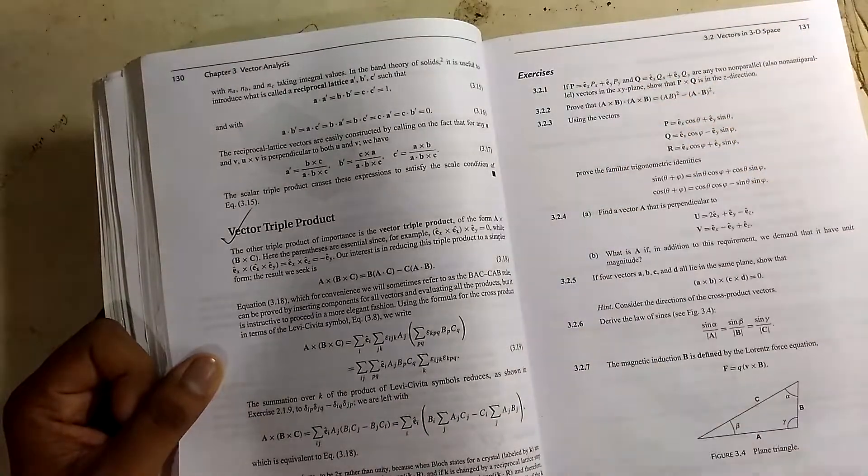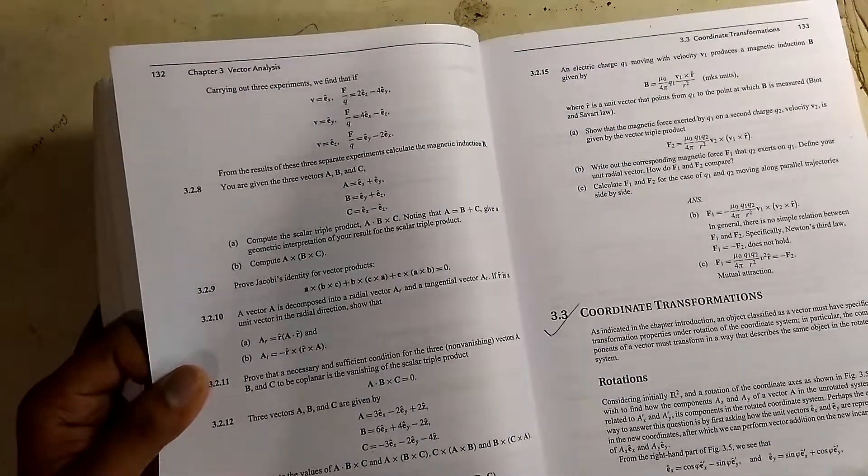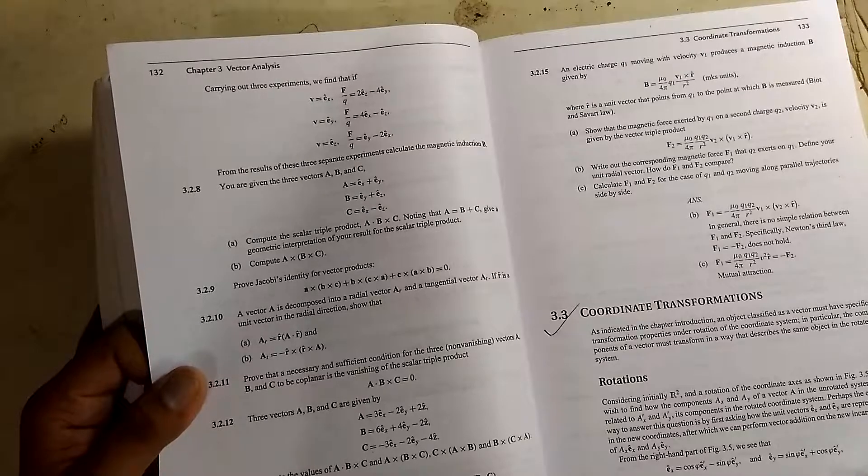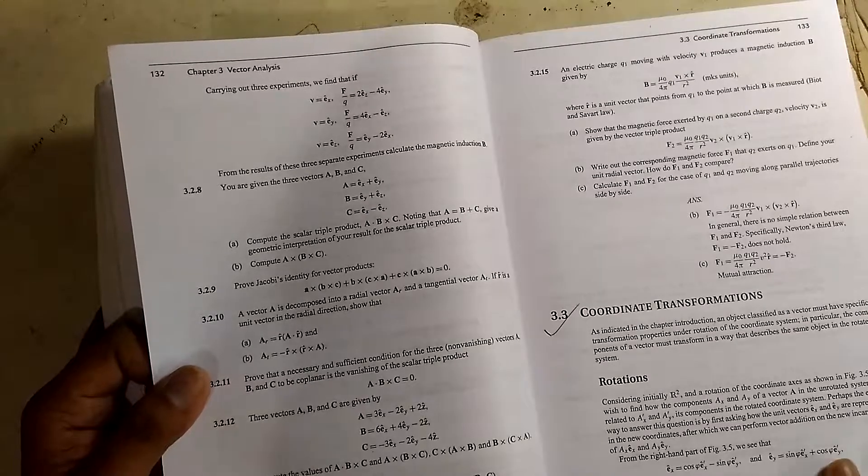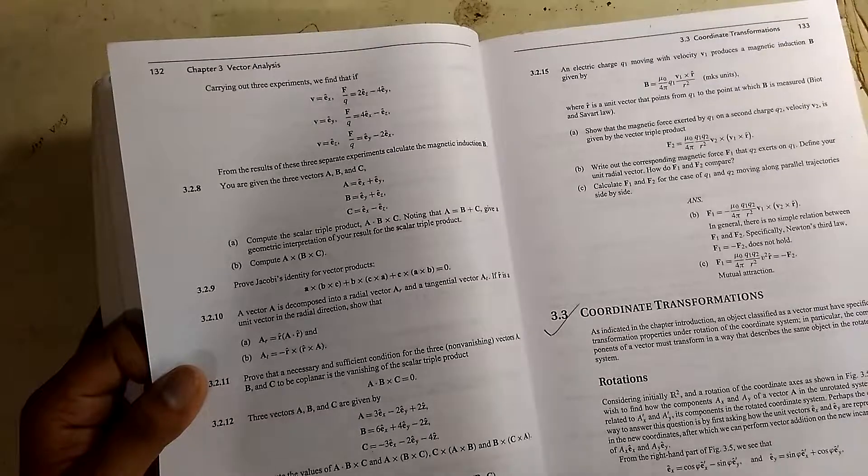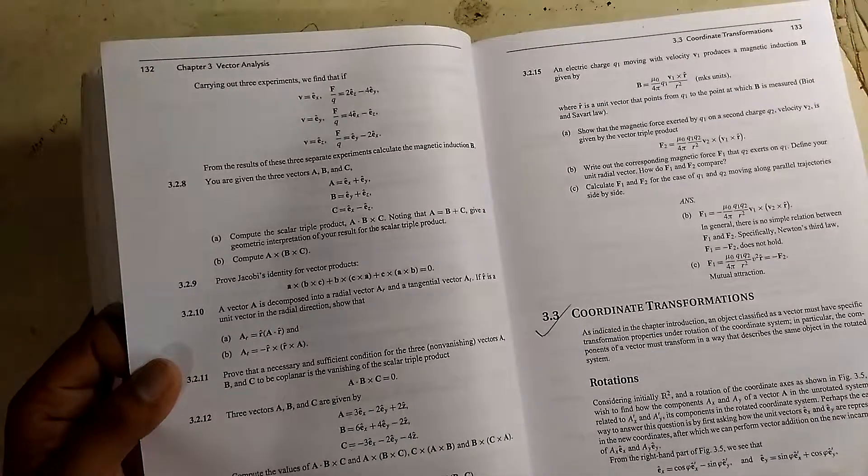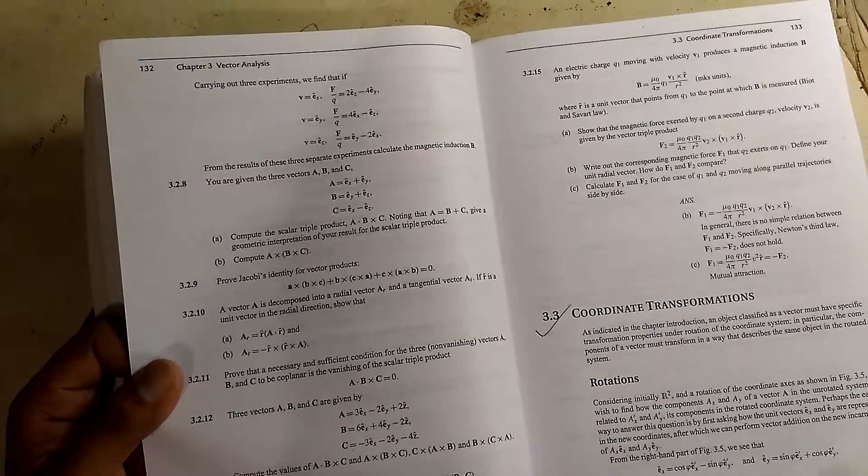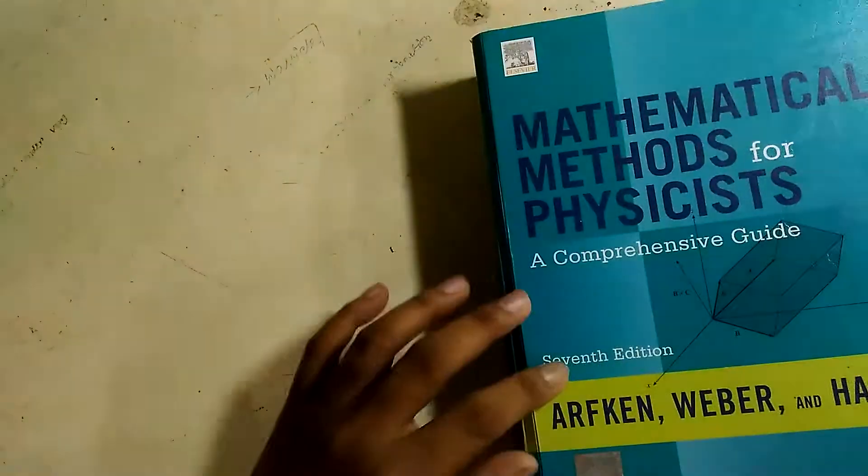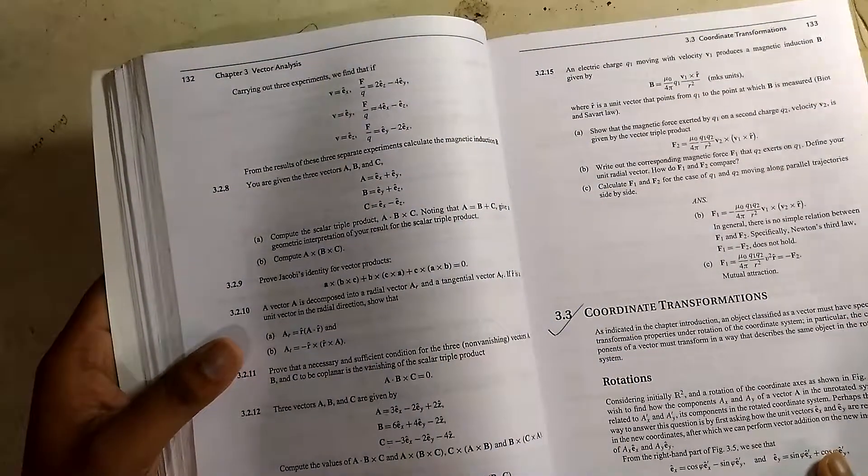Then scalar triple product, reciprocal lattice, vector triple product. There are lots of exercises present in this book which is quite useful. This is why I like this book the most - there are lots of problems. If you have your basics clear then you can easily do those calculations. The solution book for this main book is present in the market, you can also buy that.